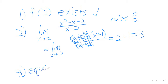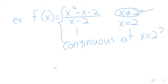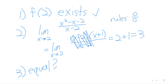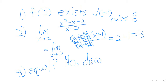Moment of truth. f(2) does exist. The limit as x approaches 2 does exist. And either they're equal or they aren't. Well, f(2) was defined to be 1. So at the last hurdle, we fall down. f(2) is 1, the limit is 3 — they're not equal. So it's discontinuous at 2.